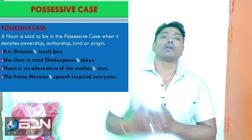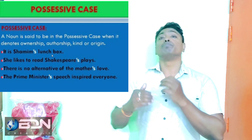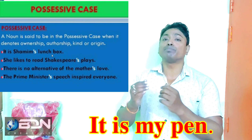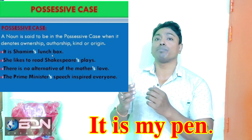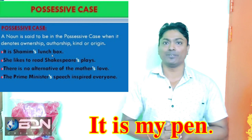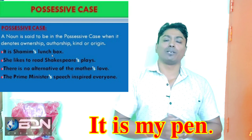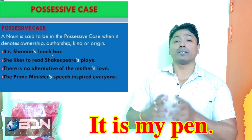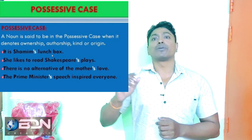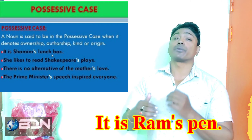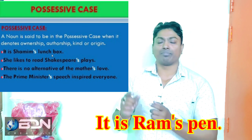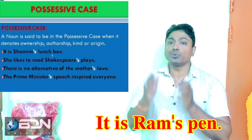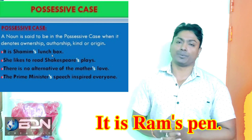Next is possessive case. What is possessive case? It shows possession or ownership. For example: 'It is my pen' — here 'my' shows possession, meaning 'amar.' So in 'my house,' the possessive case is used with pronouns. For nouns, 'It is Ram's pen' — Ram apostrophe S is used to show possession.